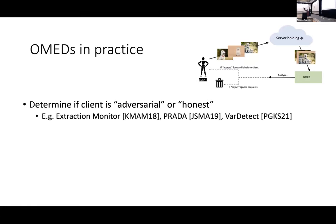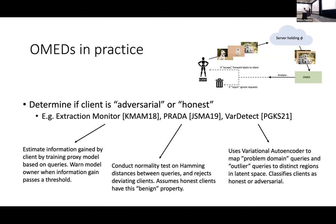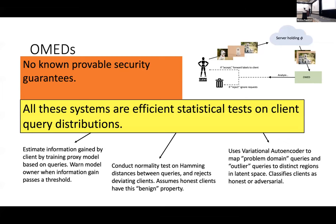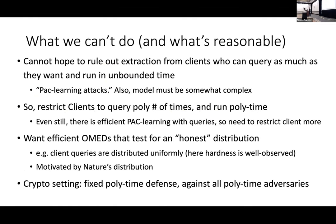There are plenty of instances of OMADs in the literature. From a practical perspective they use a lot of techniques to decide whether a client is adversarial or honest. The broader point is that these defenses, although lightweight and adding little communication overhead, essentially boil down to efficient statistical tests and don't come with any known provable security guarantees — nothing really reminiscent of what you'd expect from cryptography. I'll at least start by telling you things we definitely can't do and what might be reasonable.